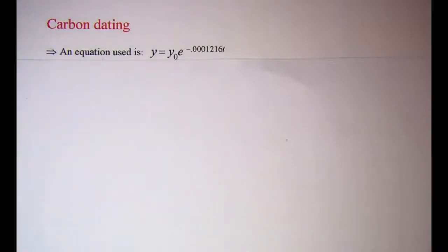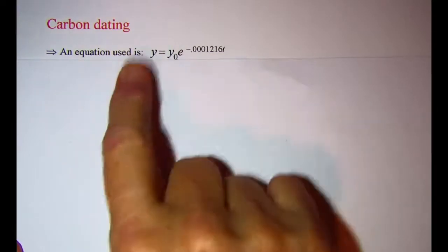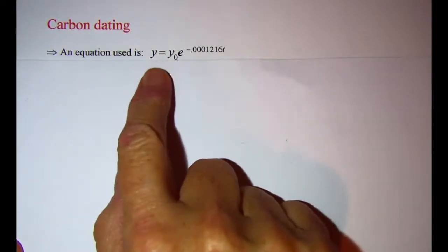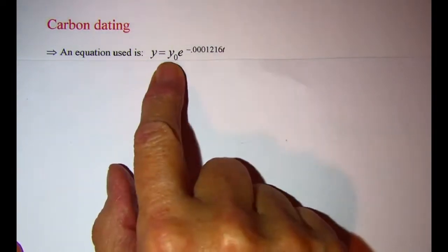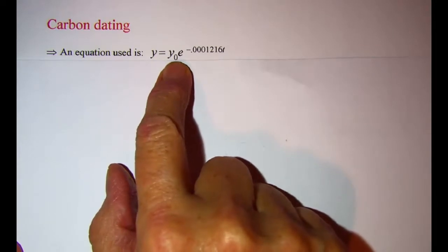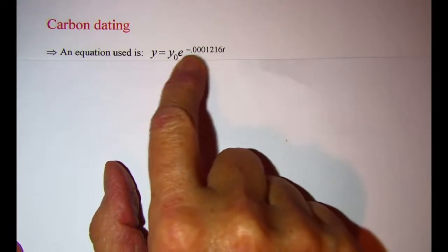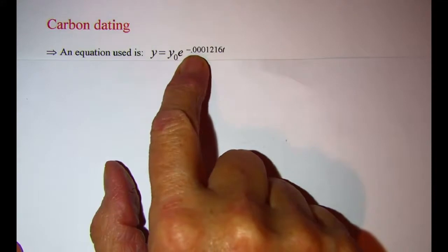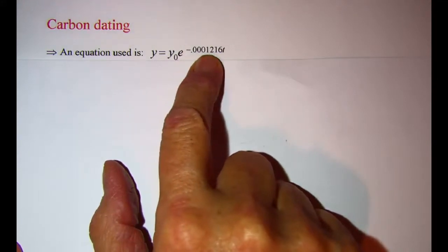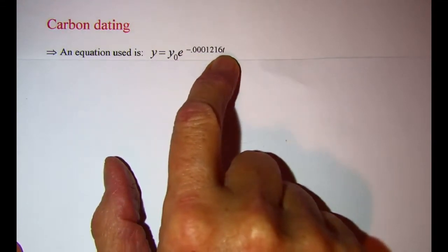In this video we will be doing a problem involving carbon dating. An equation that can be used is y equals y sub zero times e raised to the power negative 0.0001216 times t.